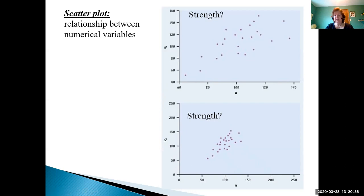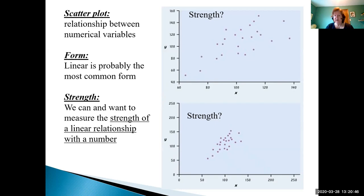Something we have to remember is that for scatter plots, the relationship between numerical variables is what we're looking for. The form for us is going to be linear, but the strength, this is something that we're going to want a numerical measure for, because our eyes could deceive us.